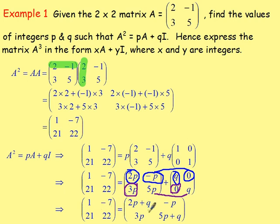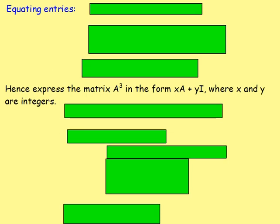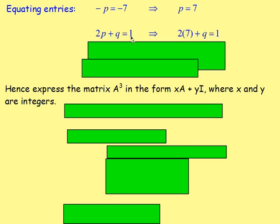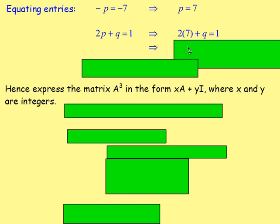You can equate the entries — because these matrices are equal, they're only equal if they're the same order and all entries are equal. From here, we know that -P must equal -7, and 3P must equal 21. Taking an equation with just one unknown: -P = -7 gives P = 7, and 3P = 21 also gives P = 7. We can then say 2P + Q must equal 1, so 2×7 + Q = 1, giving 14 + Q = 1, and therefore Q = -13.